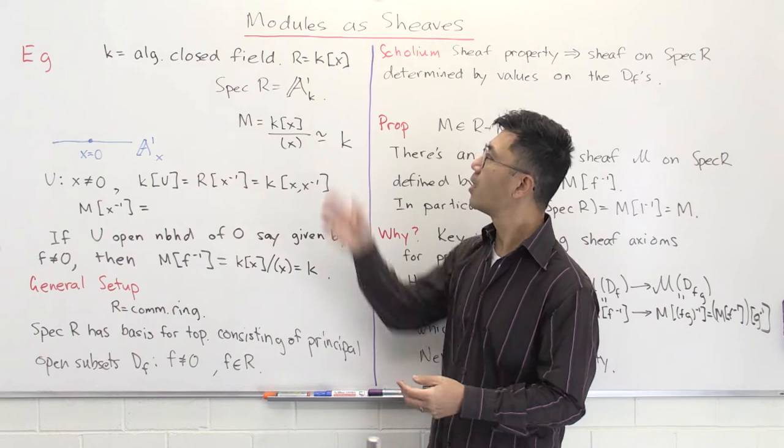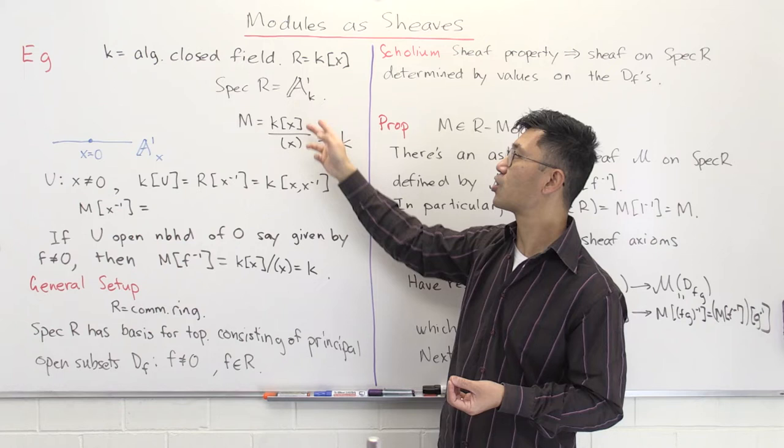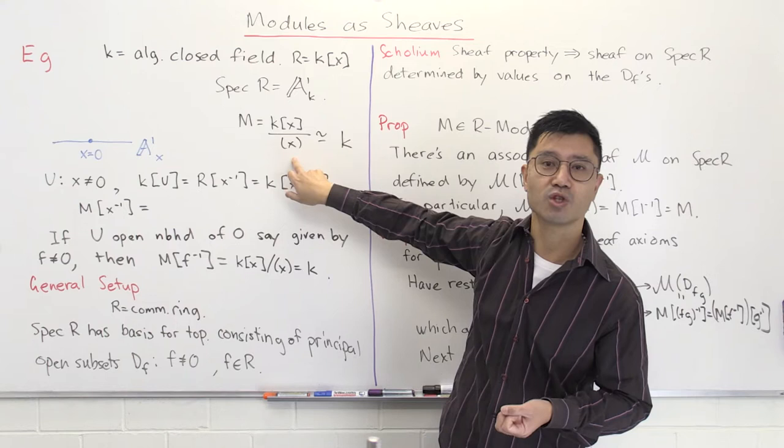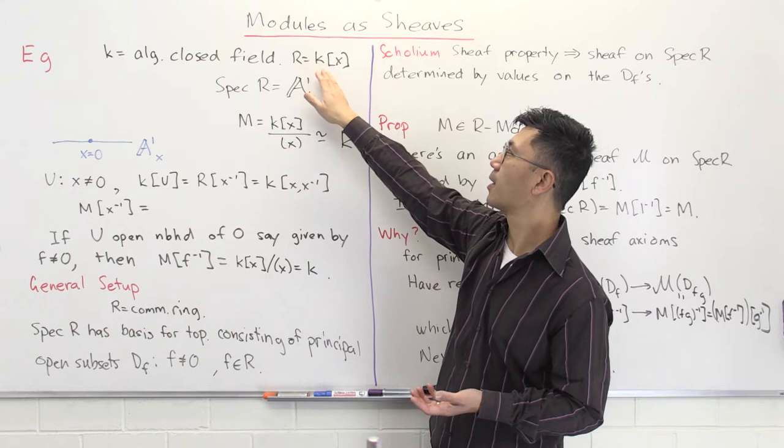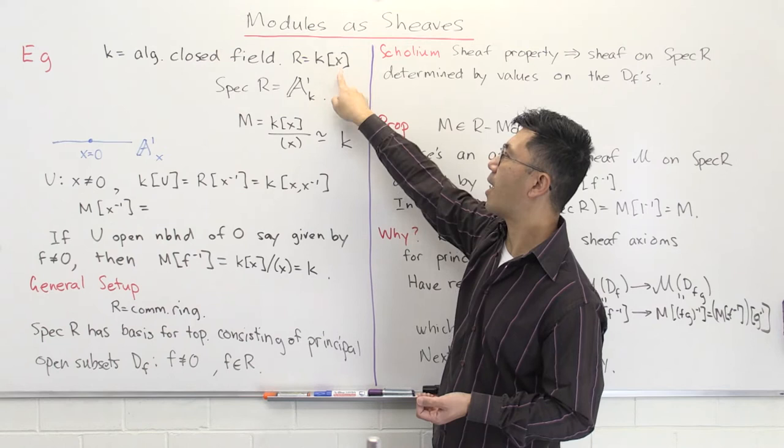We also want to have a module. The module here is simple enough — it's just going to be a quotient of k[x], and we're going to quotient that by the ideal generated by x. So as a vector space, this is just k. But if you write it as k, you don't know what the action of k[x] is. It's a k-linear action, and x acts as zero here.